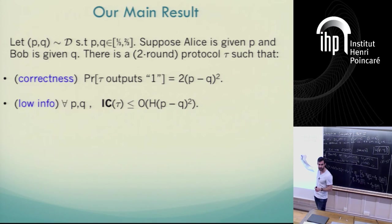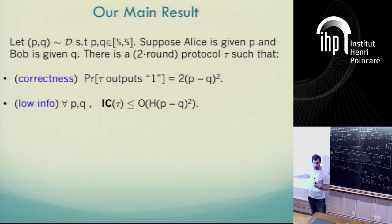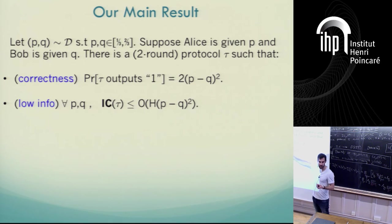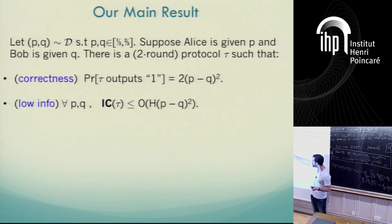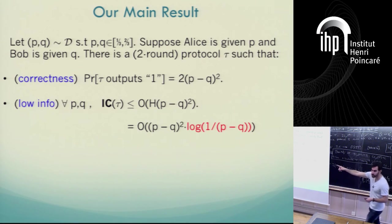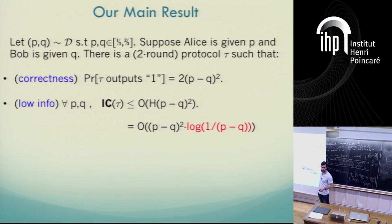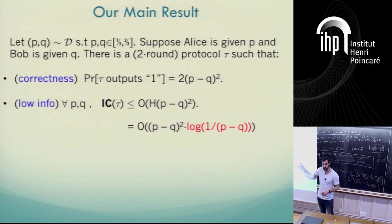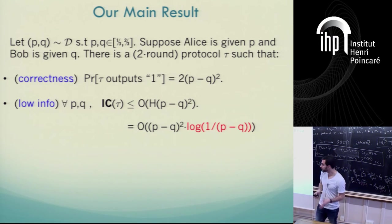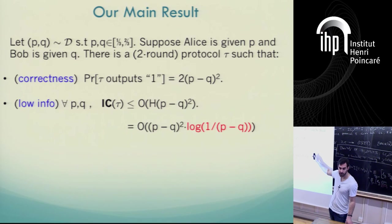Our main result is an interactive, in fact a two-round procedure, that allows the players to click with probability exactly 2(P - Q)^2, and the information they reveal is only a logarithmic factor more than the best we can hope for. The overall information cost of this procedure will be roughly the entropy of (pi_i - q_i)^2. This extra overhead turns out not to be important for the applications we have in mind.